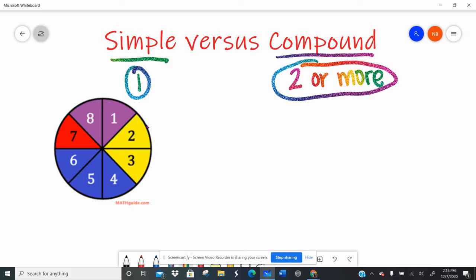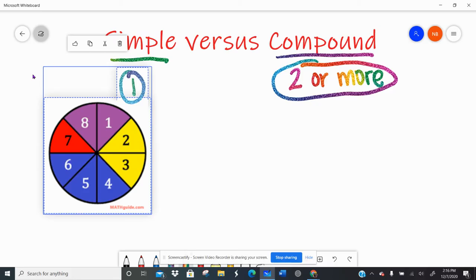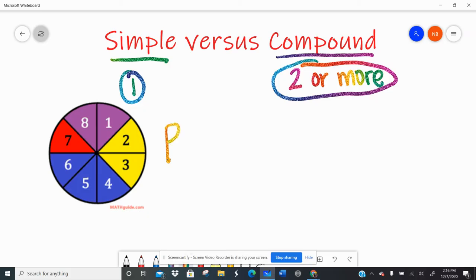So right here we have this lovely spinner. And if we were in class, we'd be holding a spinner and we would actually be doing some spinning, doing some experiments. But right now we're going to talk about probability kind of in theory, what should be happening when we're spinning the spinner. So remember, simple probability is one thing is happening. We write a probability number sentence by writing a big P for probability, and then in parentheses underneath, we write about what we want to happen. So let's talk about the probability of spinning and landing on yellow.